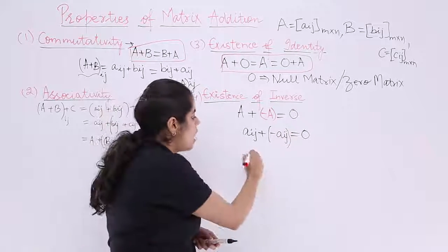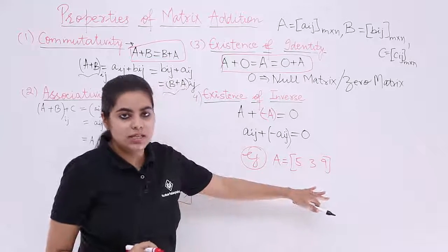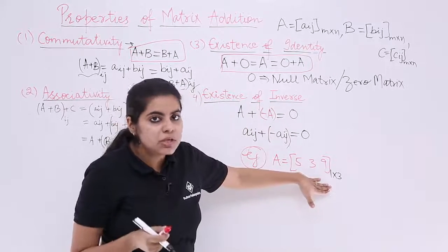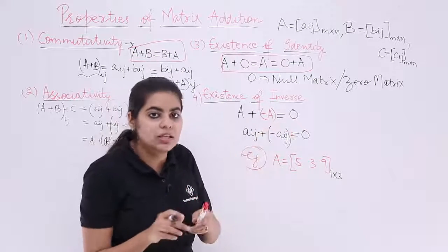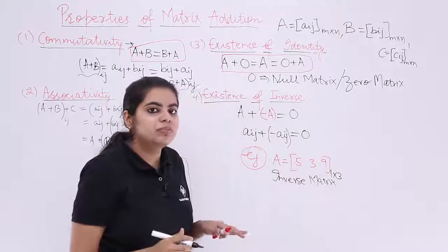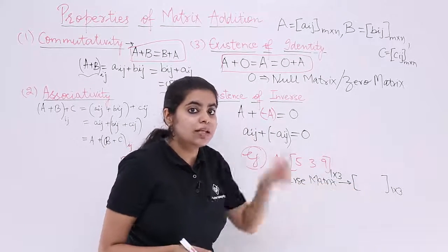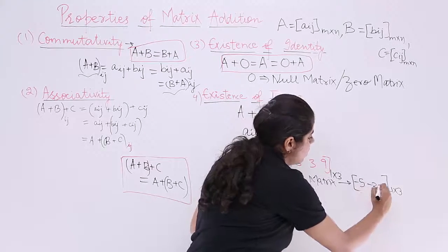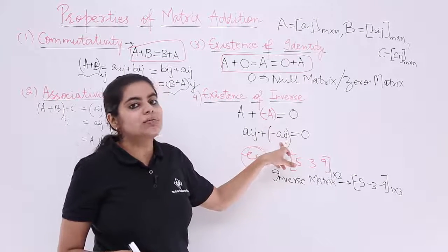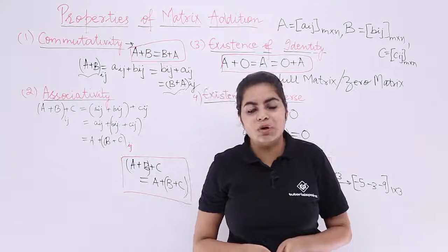Taking a matrix example: if A is the row matrix 5 3 9, which is 1 by 3, its inverse is minus 5, minus 3, minus 9, because adding them gives 0 0 0 — the zero matrix. The inverse is simply the negative of each element, because only minus of that element gives the identity zero. In this video we saw a few properties based on the concept of matrix addition.